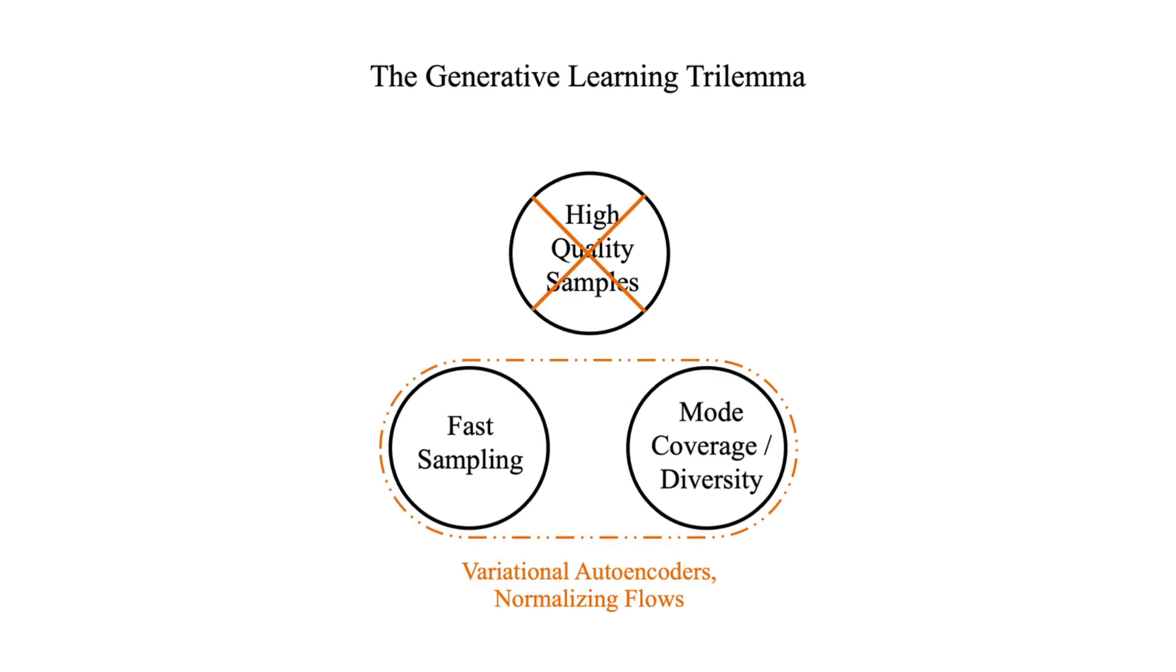Now let's see whether popular generative learning models can satisfy these criteria. First we have variational autoencoders and normalizing flows. Among the generative models these are the simpler ones, therefore they offer fast sampling capabilities. They also have decent mode coverage, but unfortunately the samples taken from these models usually lack quality.